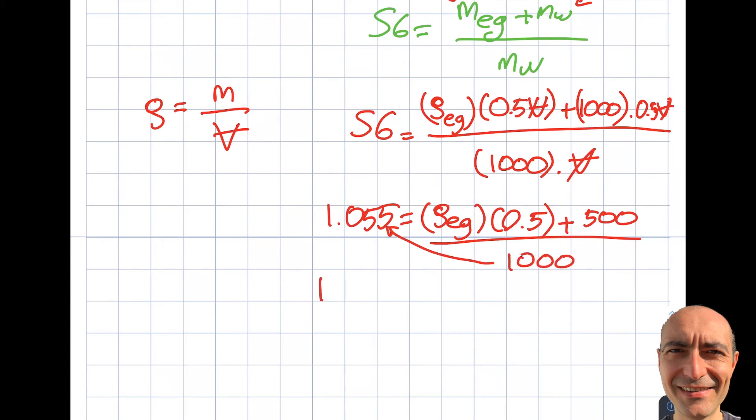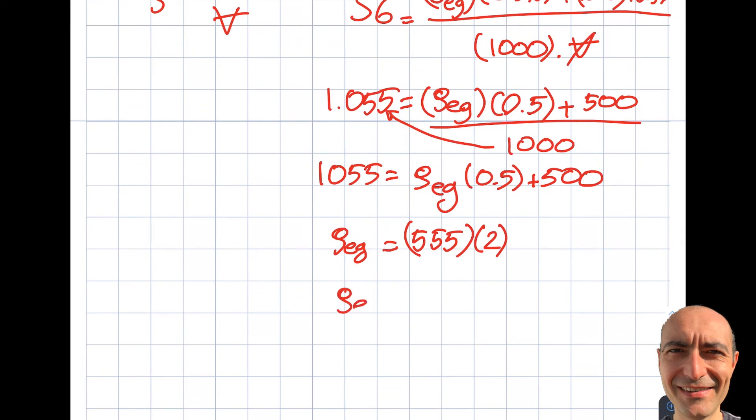If I move this over here, I'm going to get 1.055 equals density of ethylene glycol times 0.5 plus 500. Then from here, the density of ethylene glycol will equal 1.055 minus 500 is 555 times 2. From here I get myself density of ethylene glycol is 1110.